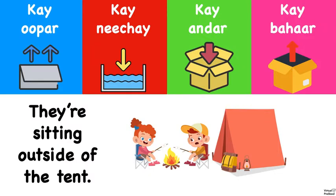So now we're going to do some practice problems. I want you to tell me which one you would choose: ke upar, ke neiche, ke under, or ke bahar. The sentence is they're sitting outside of the tent. Use the pictures to guide you - the pictures show arrows on top, water below, an open box with things going inside, and an open box with things coming out. Outside would be ke bahar.